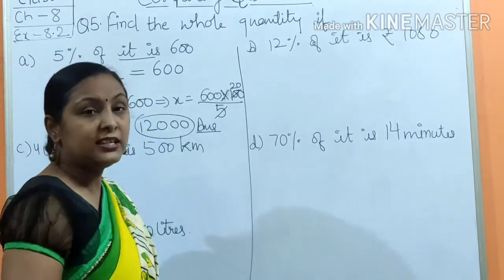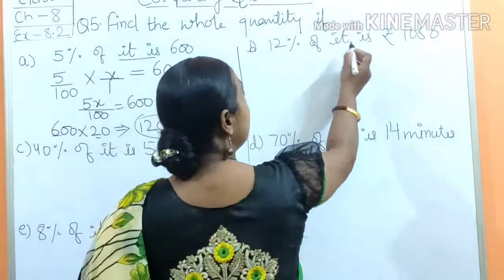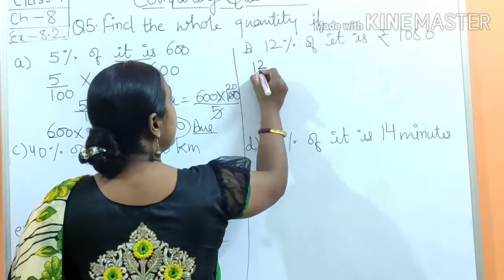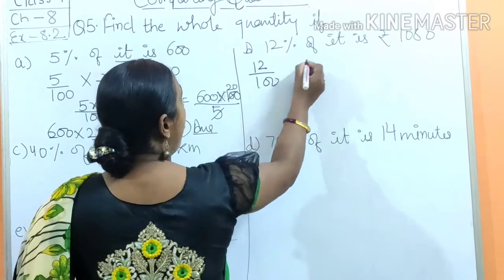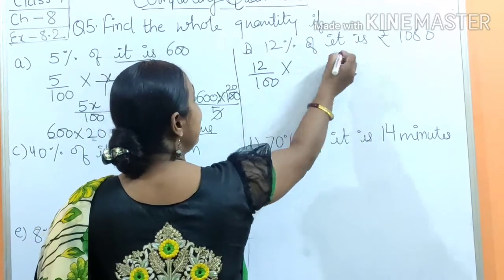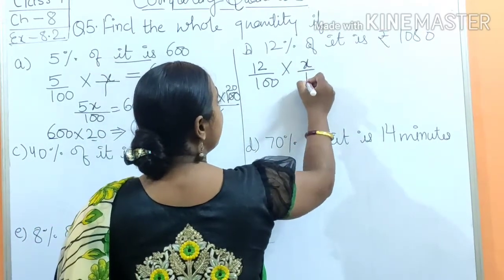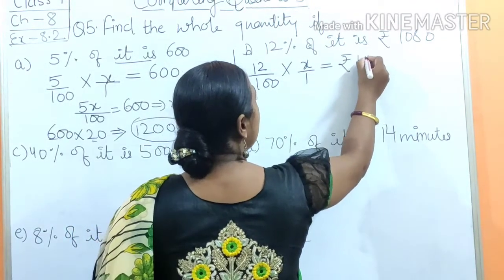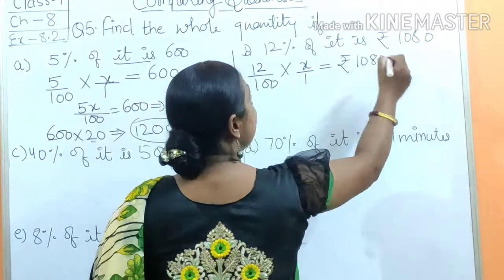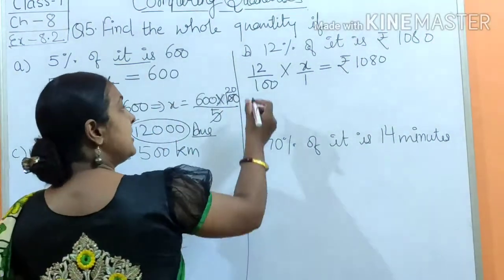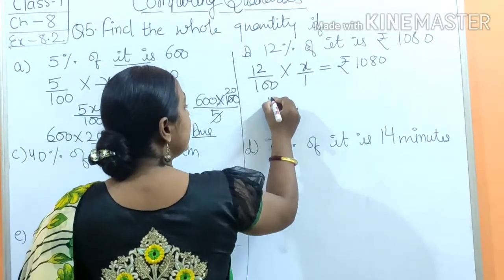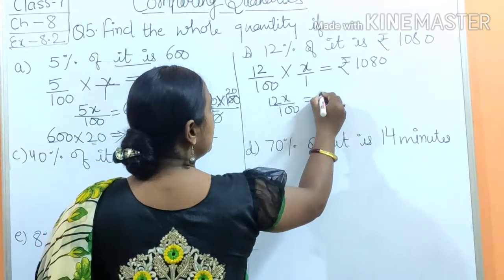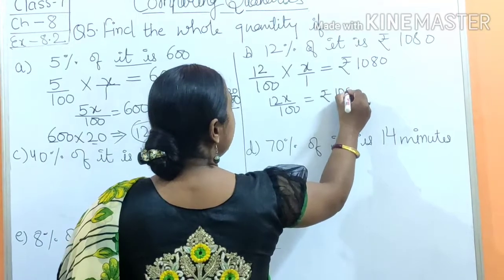We do not have the whole quantity given here. And what should I assume? You can assume something like X, Y, Z, A, B, C. So I will do this again, it means unknown quantity. So 12% means 12 upon 100, of means multiply, it means x upon 1, and equals to rupees 1080. Again transposing, we need to do it. 12 multiply x, that is 12x upon 100 equals to rupees 1080.